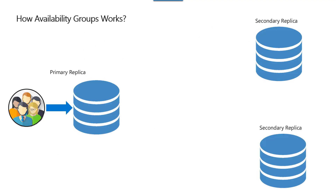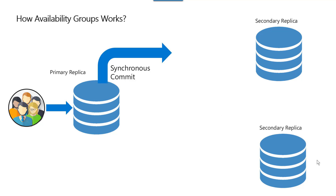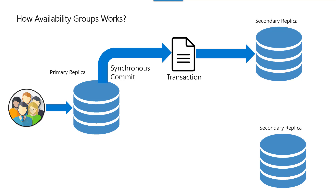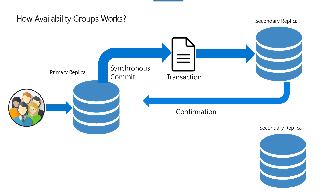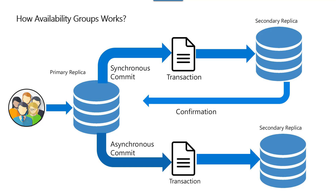How do availability groups really work? Whenever a user tries to access the replica and there is a transaction committed, here's how it works in both synchronization options. For synchronous commit: the moment the transaction is committed on the primary replica, a transaction log is sent to the secondary replica. Once the transaction log is executed on the secondary replica, a confirmation is received by the primary replica and then the transaction is really committed. That is why there is transaction latency in synchronous commit. In asynchronous commit, the transaction logs are sent to the secondary replica but the primary replica does not wait until the secondary replica is updated, which is why it provides a faster response time.